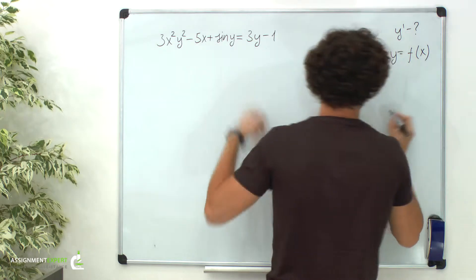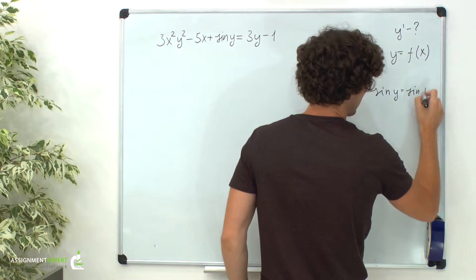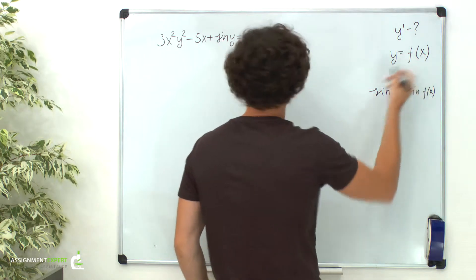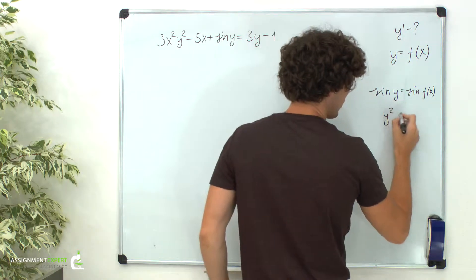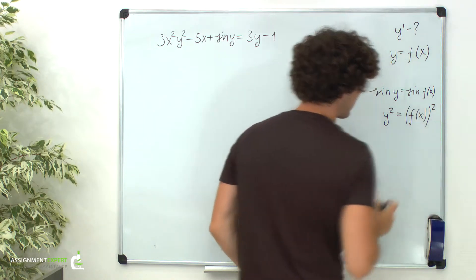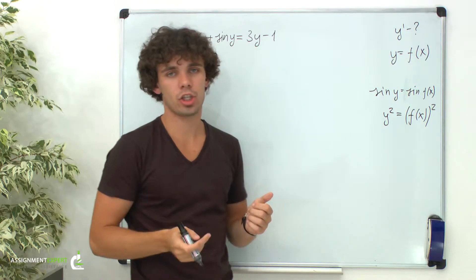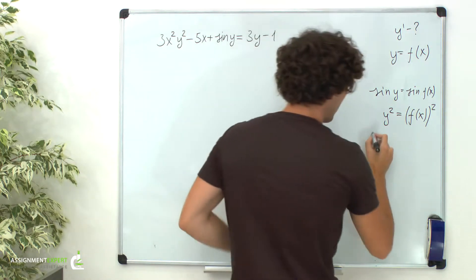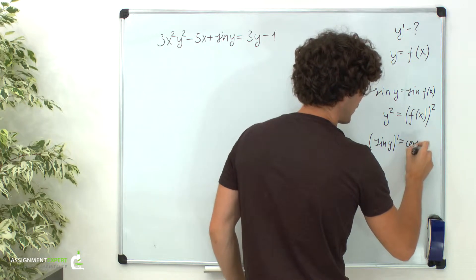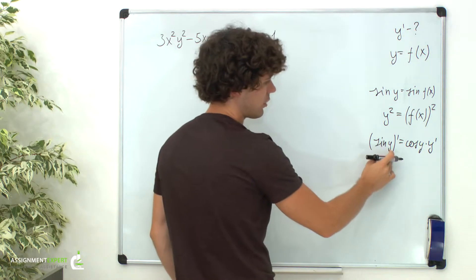So, for example, sine of y is the sine of a function of x. This is a composite function because y is a function of x. As well as y squared, which is also a squared function of x. We know that to find the derivative of a composite function we need to apply the chain rule. The derivative of sine of y equals cosine of y — the derivative of the sine function — times y prime, the derivative of the inside function.